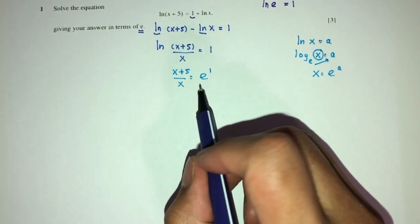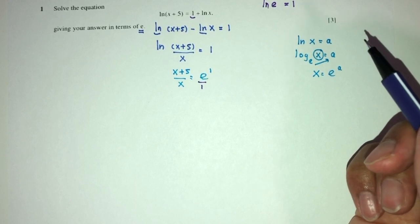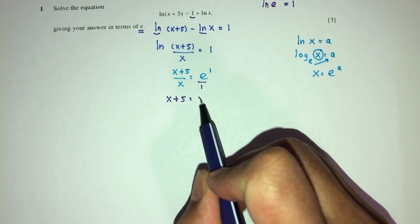So we will have this for now, and then we have to cross-multiply. You will have x plus 5 equal to x times exponential.